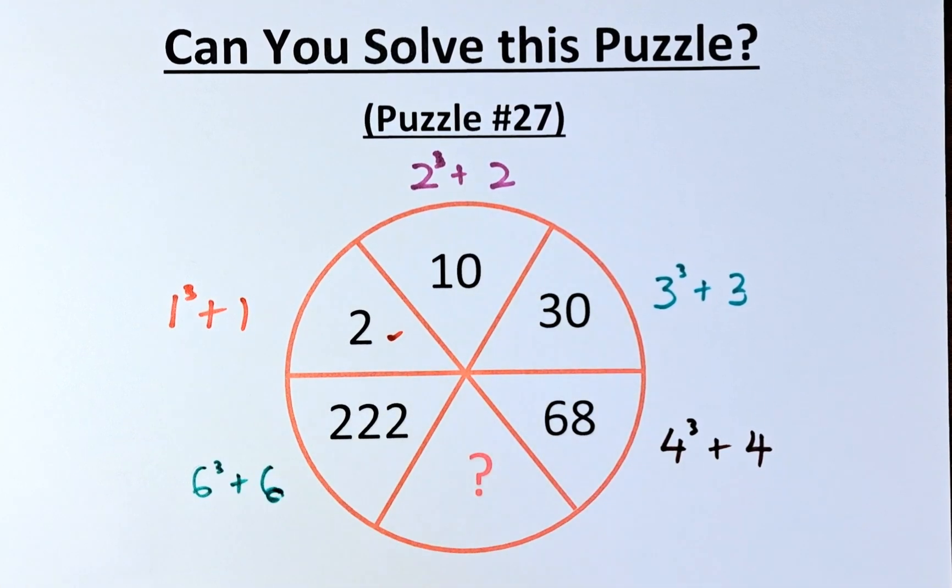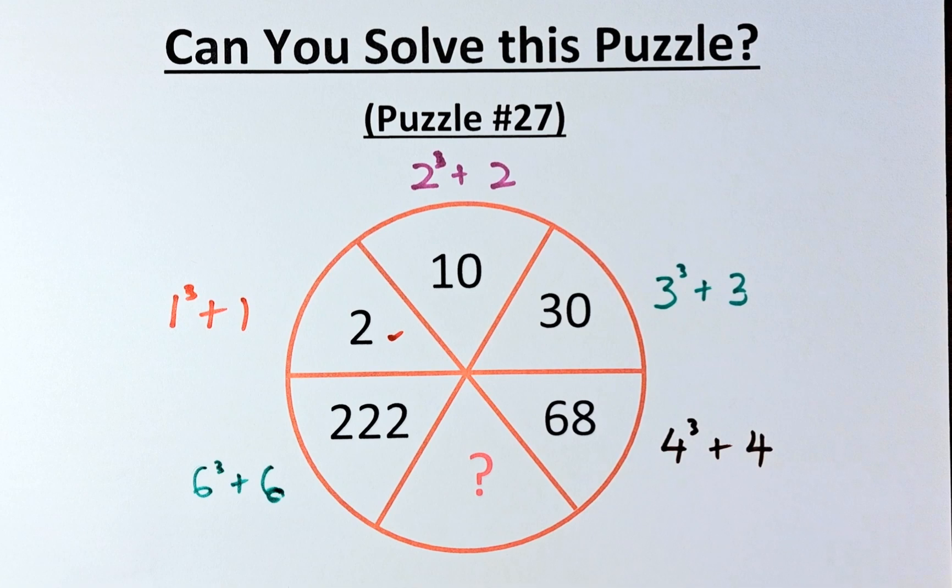6 cube is actually equal to 216. When you add 6 that will give us 222.